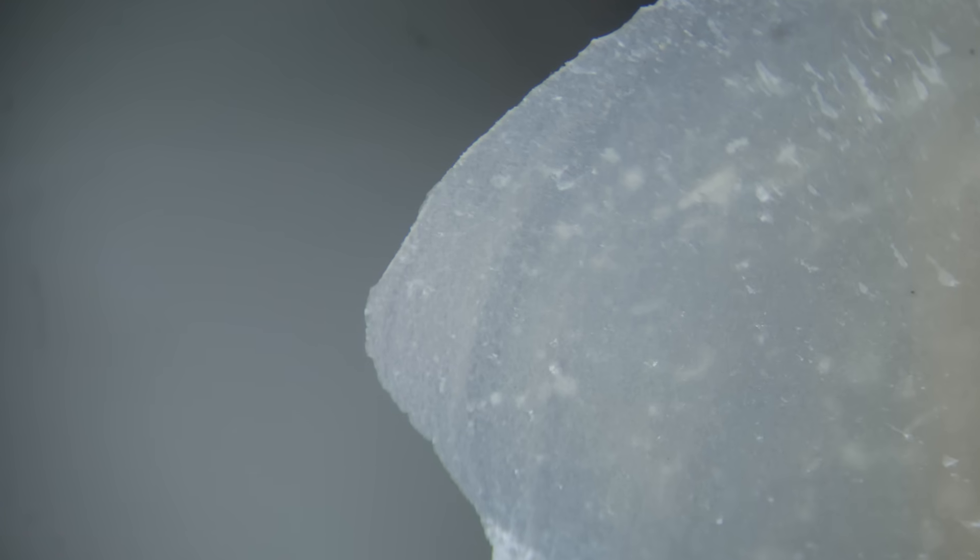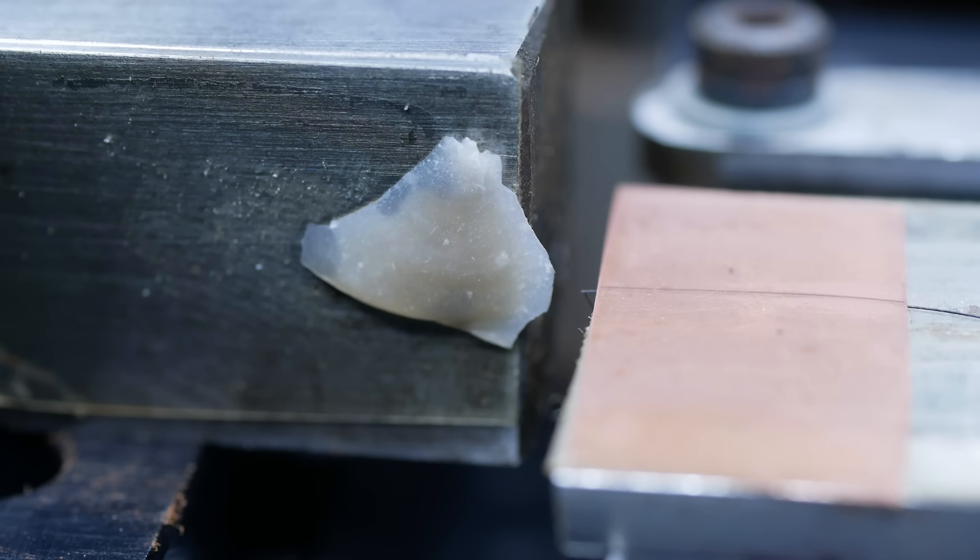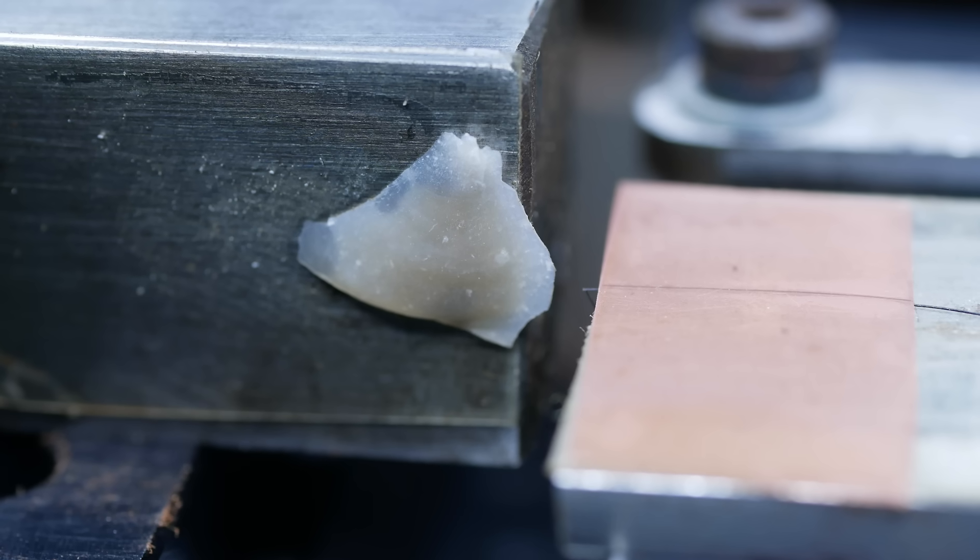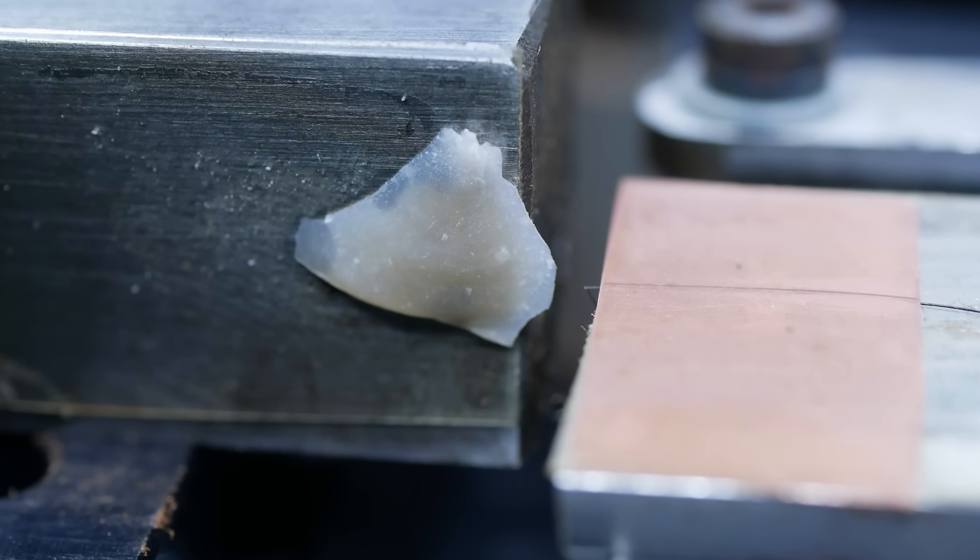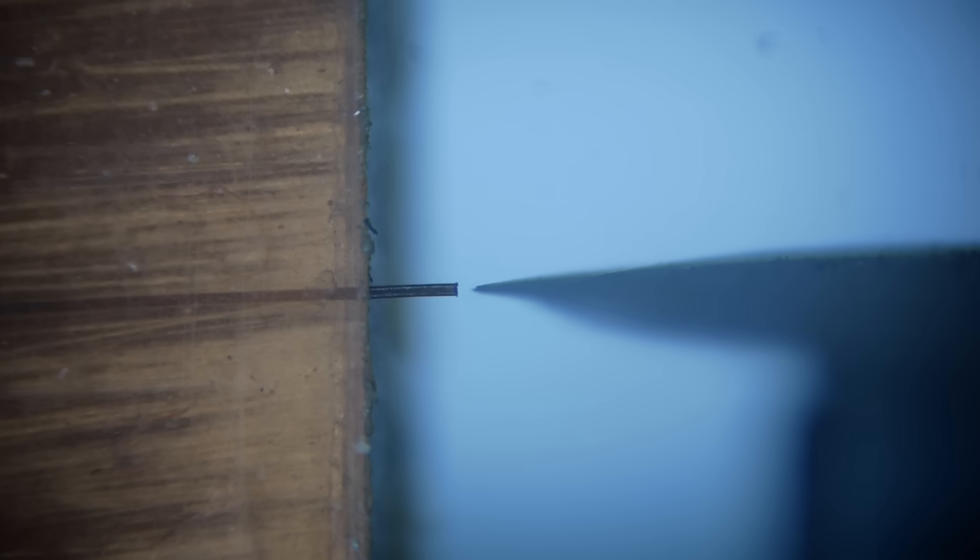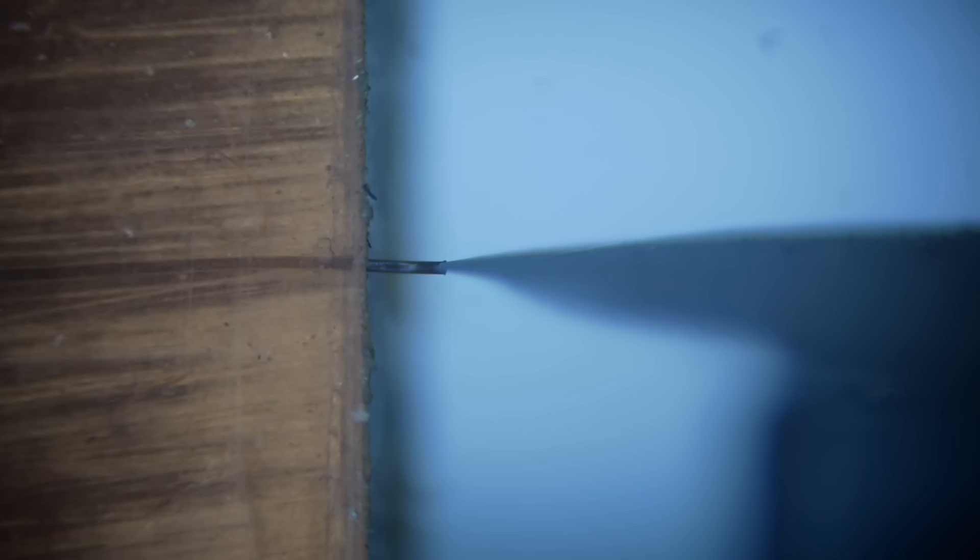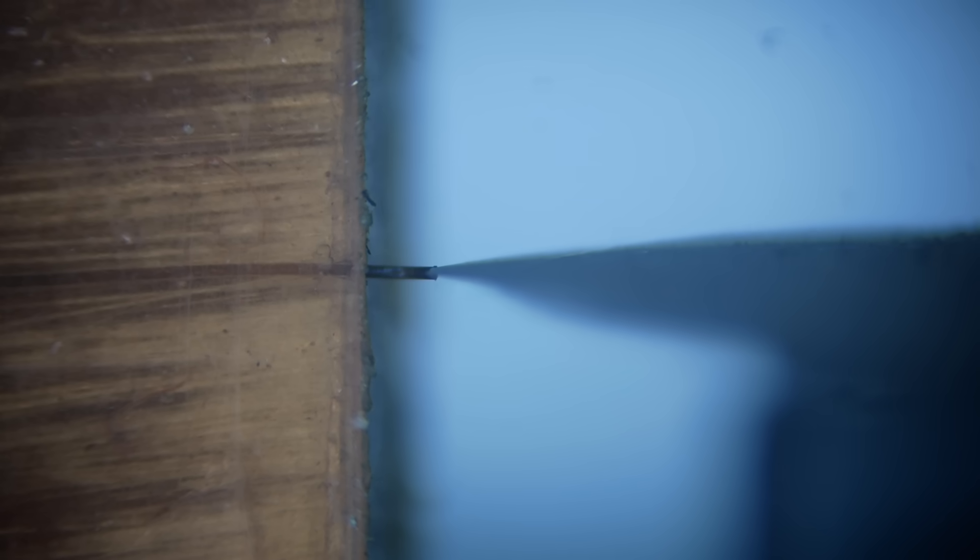So how about the knapped flint? Alistair selected the sharpest looking knapped fragment and carefully set it up, as he did with the razor blade and chisel, but it just wouldn't split the hair. Instead it just buckled. So what's going on? Perhaps flint isn't as sharp as we thought.